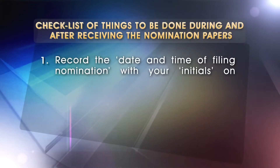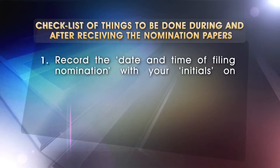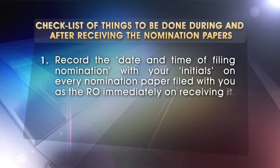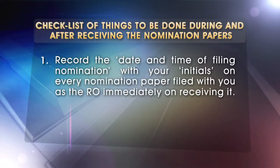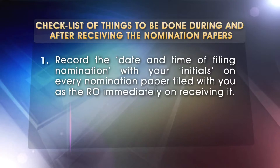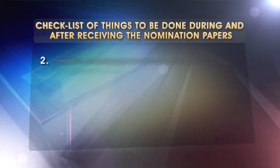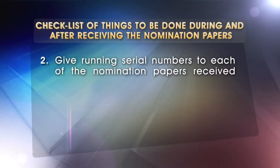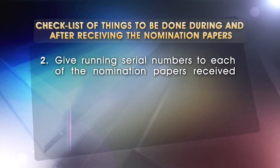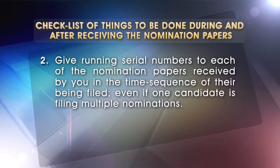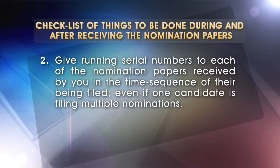1. Record the date and time of filing nomination, with your initials on every nomination paper filed with you as the R.O., immediately on receiving it. 2. Give running serial numbers to each of the nomination papers received by you, in the time sequence of their being filed, even if one candidate is filing multiple nominations.